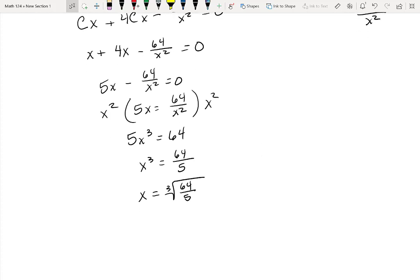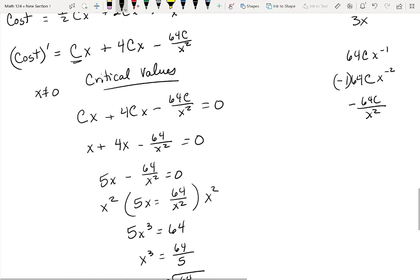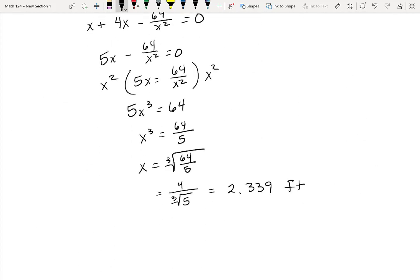And you might want to check this on your calculator. The cube root of 64 should be 4. So this should be 4 over the cube root of 5, which should be about 2.339. What units are we working with? Is this feet? Okay, feet.